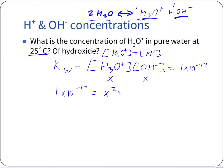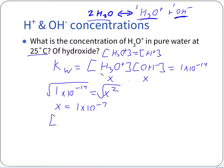To solve, we take the square root of both sides. X equals the square root of 1×10⁻¹⁴, which is 10 to the negative 7th, so 1×10⁻⁷. That X is the concentration of hydronium, which is what we're looking for. The concentration of H₃O⁺ is equal to 1×10⁻⁷.